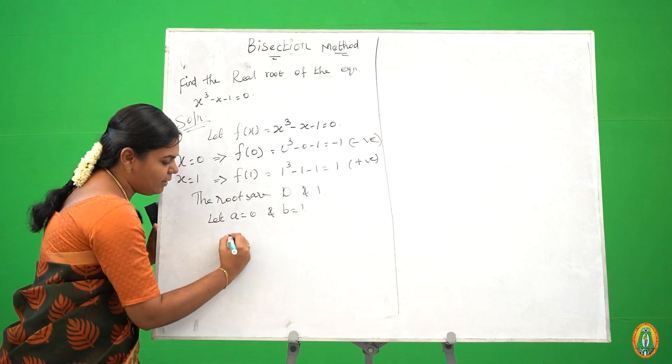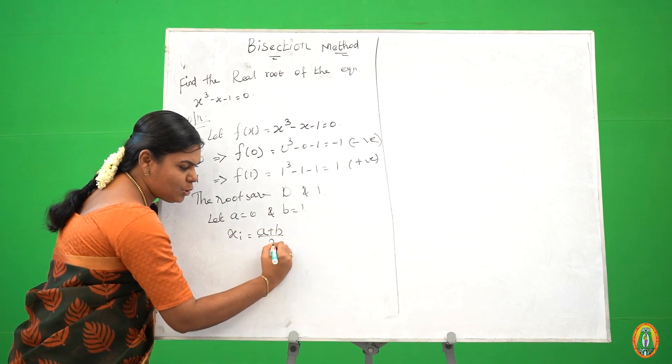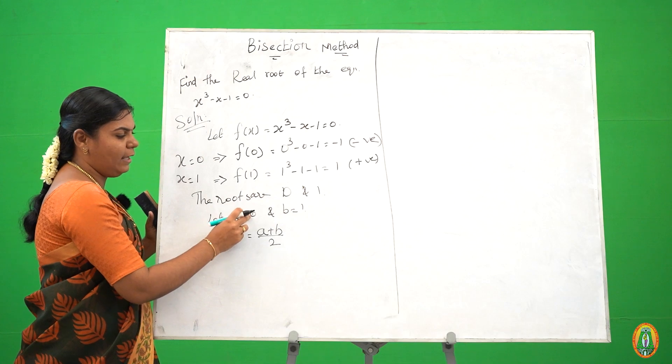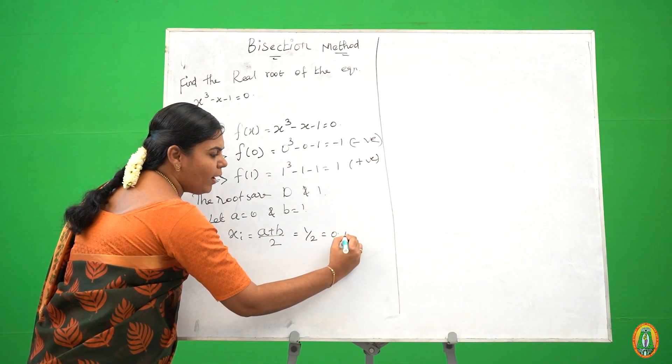The bisection formula: xi is equal to a plus b by 2. So a is 0 and b is 1. The value is 0.5.